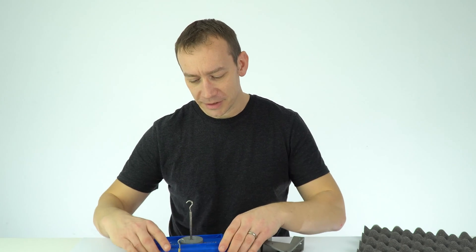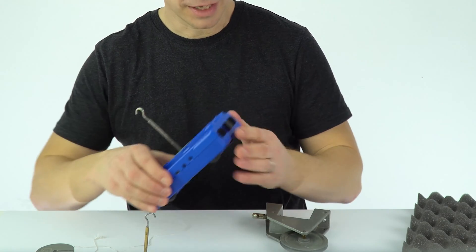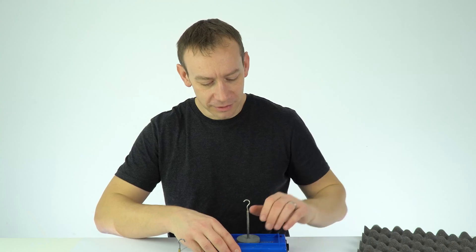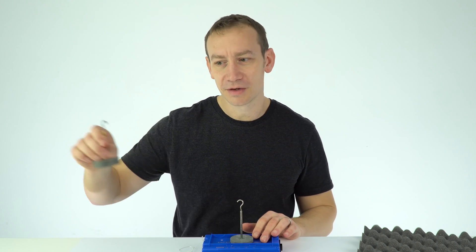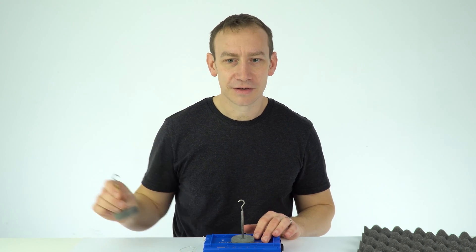In the next few videos I'm going to be looking at some of the factors that affect the acceleration of an object. So what we're going to be doing is using this trolley over here and we can cause this trolley to accelerate by applying a force to it, and the force is going to be applied by this mass which is going to be overhanging the end of the bench.